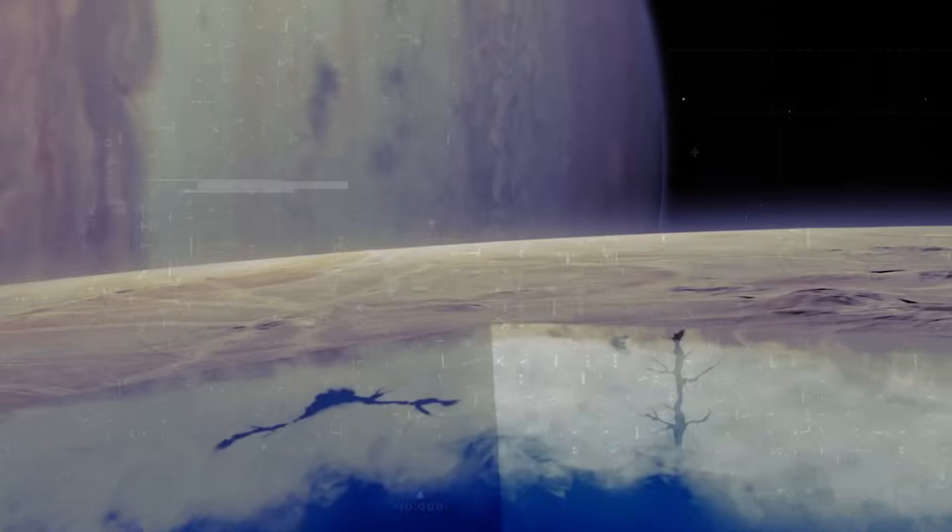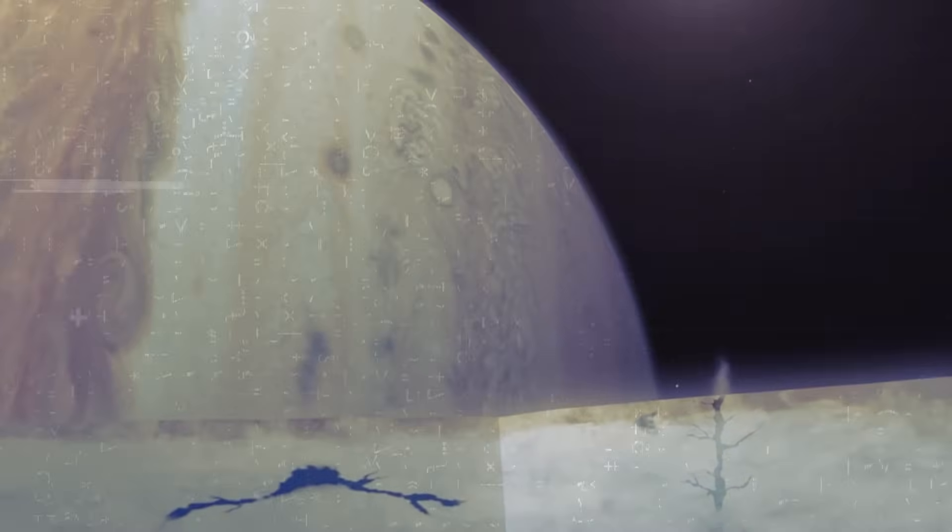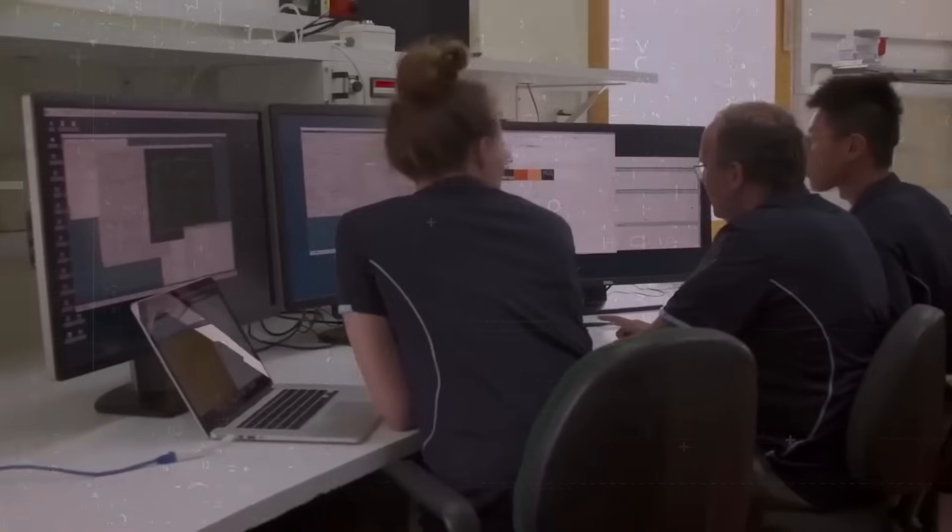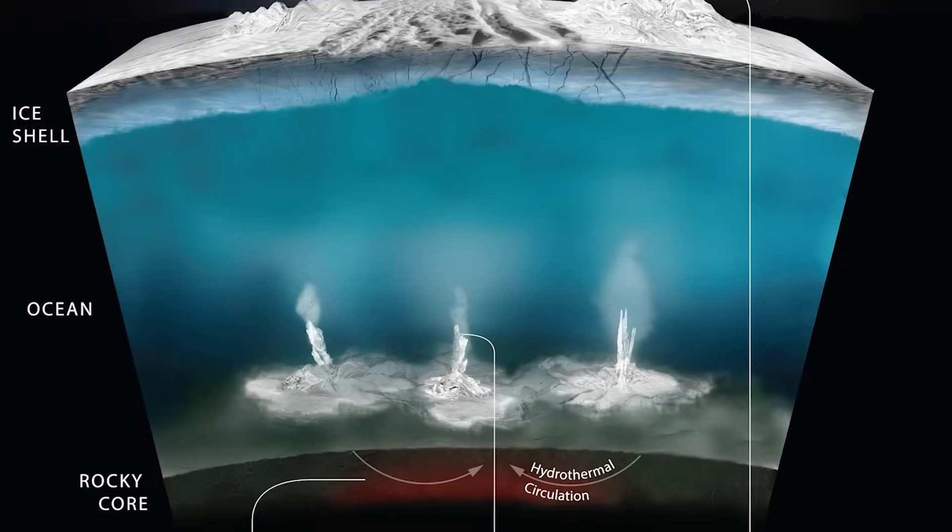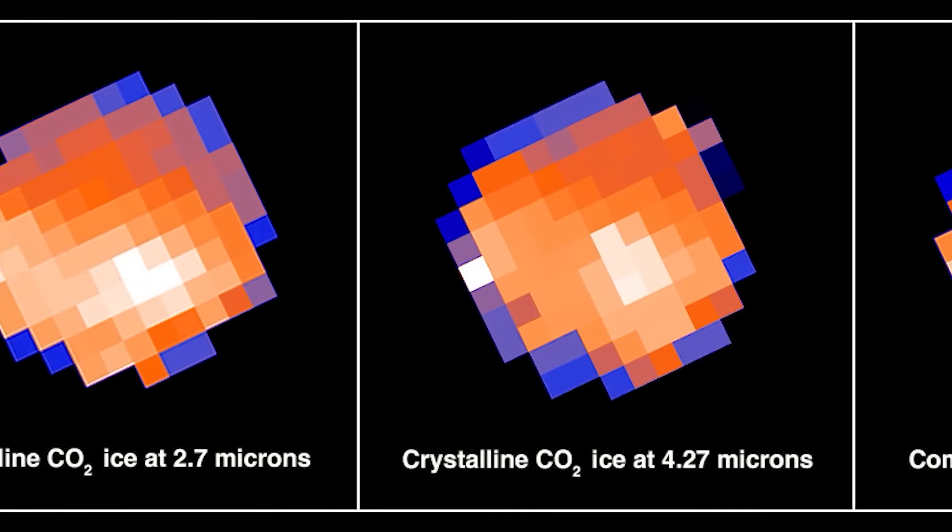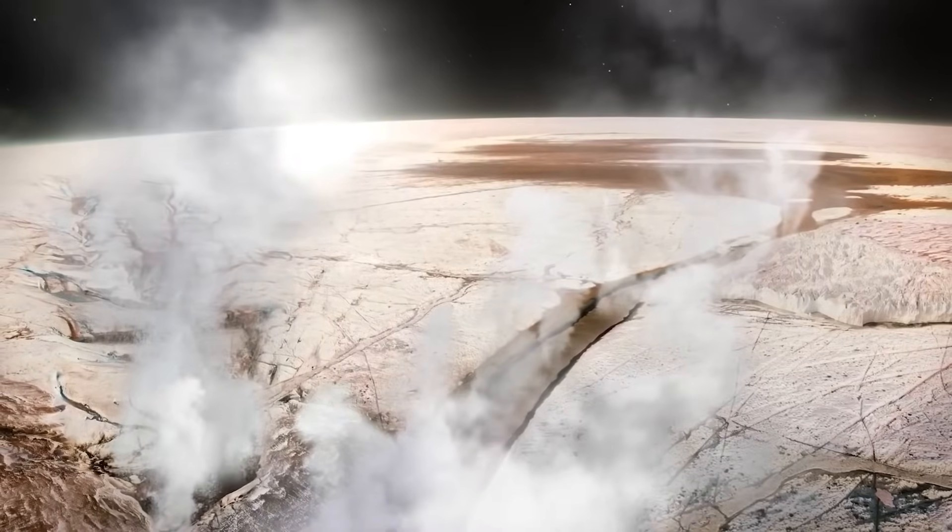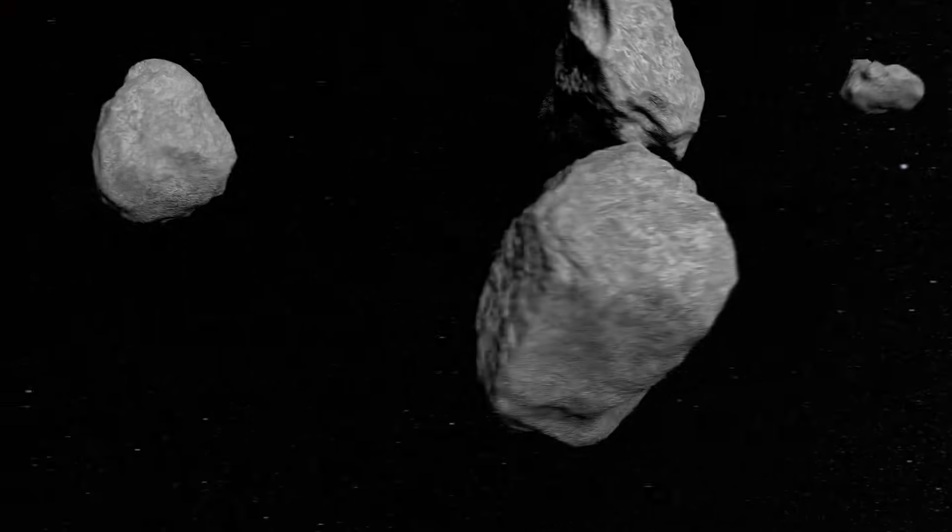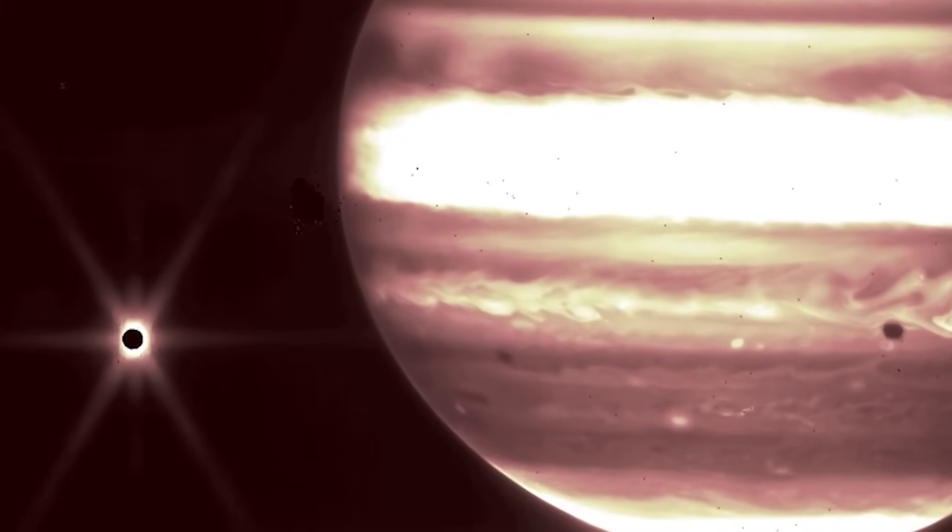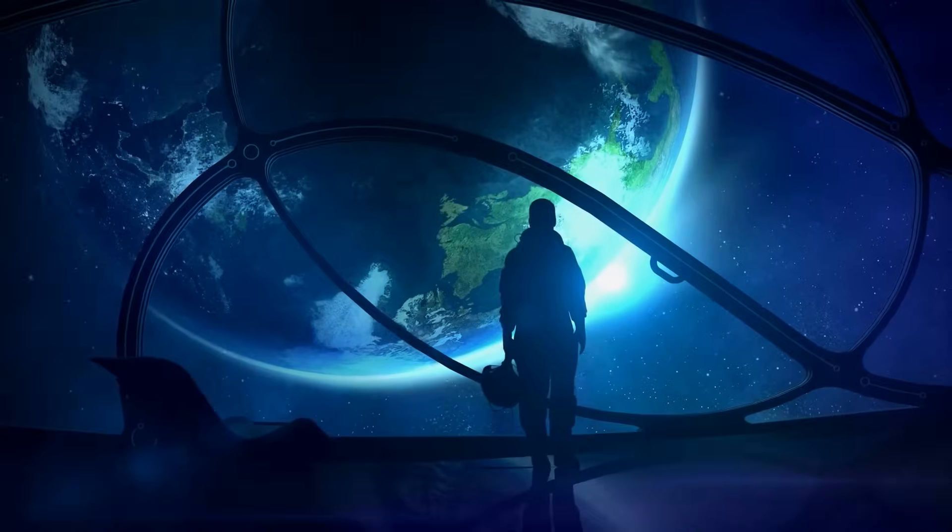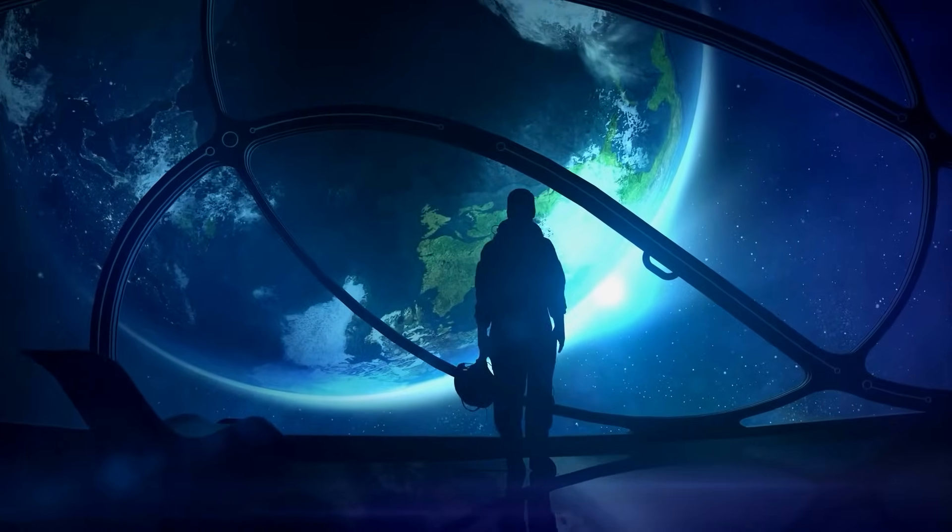This discovery has important implications for the search for extraterrestrial life. Europa's main attraction is its hidden ocean beneath a thick layer of ice. Previous research has already shown that this ocean exists. What's really interesting is that the carbon dioxide seems to have come from Europa's own subsurface ocean, not from outside sources like meteorites. And it looks like this carbon was deposited on Europa's surface fairly recently. This discovery has opened up new possibilities for the study of life beyond Earth.